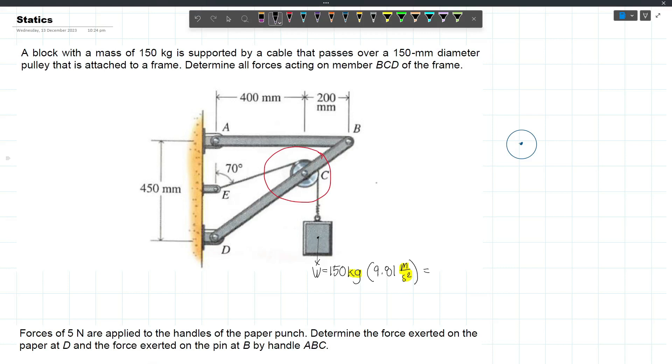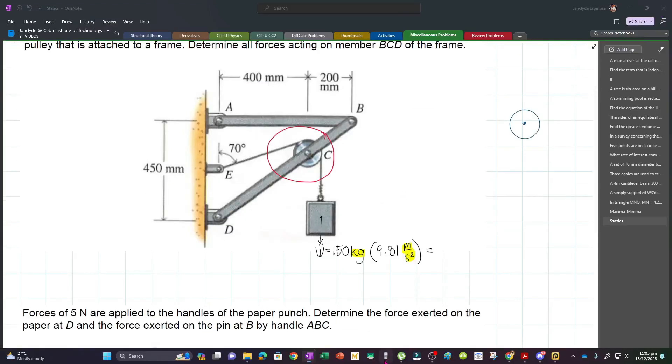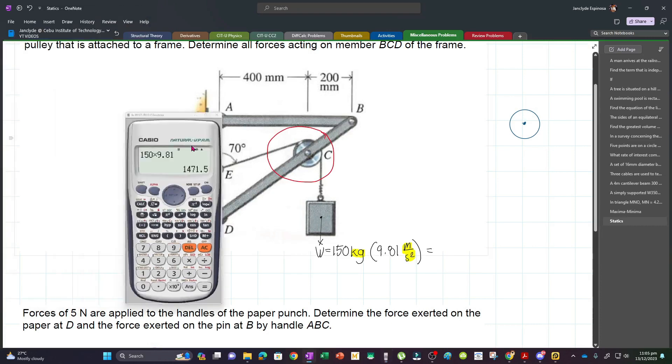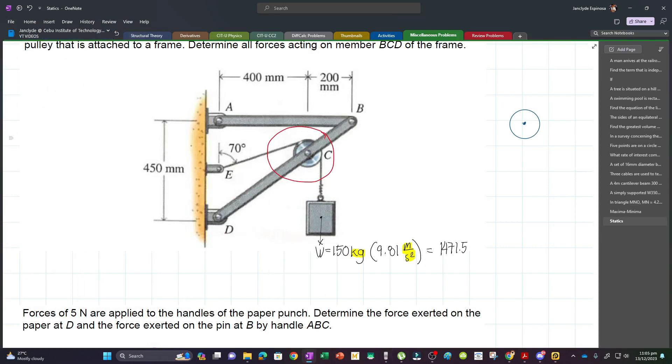Let's calculate: 150 times 9.81 equals 1471.5 Newtons. That means the force here downward is 1471.5. We are considering this pulley. It has a reaction there.